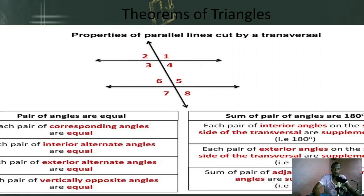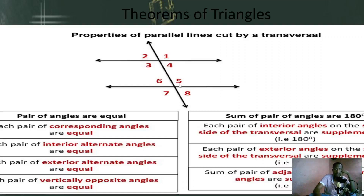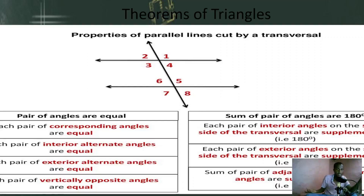Let me start from corresponding angles. One and five are corresponding angles — they are equal. Four and eight are corresponding angles — they are equal. Three and seven are corresponding angles — they are equal. Two and six are corresponding angles — they are equal. Corresponding angles are always equal.